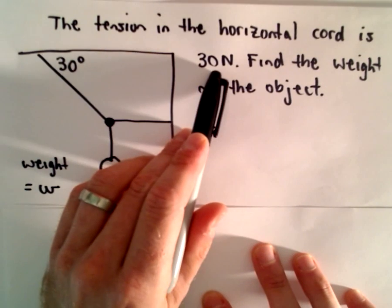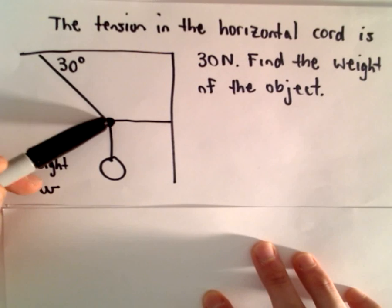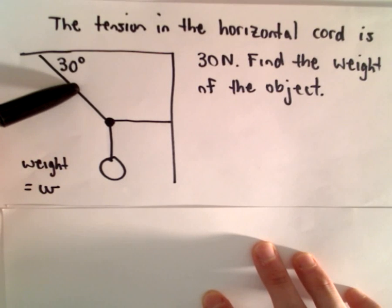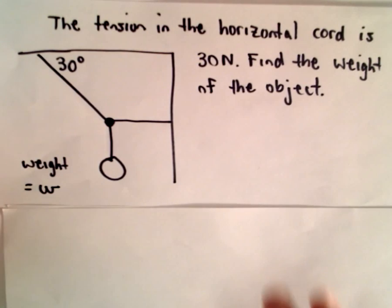We're told that the tension in that horizontal cord is 30 newtons. And this other cord that's connecting it to the ceiling, we don't know its tension, but we know it makes an angle of 30 degrees. And from that information, we want to find the weight of the object.